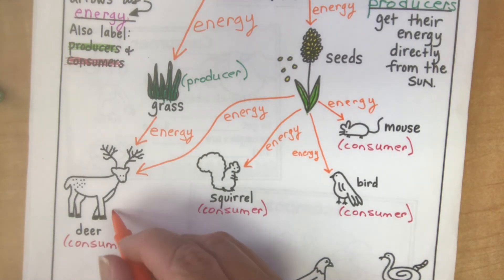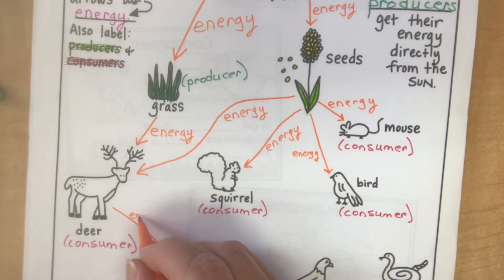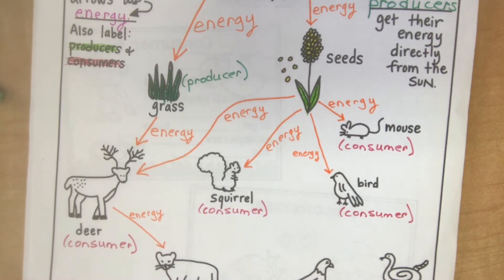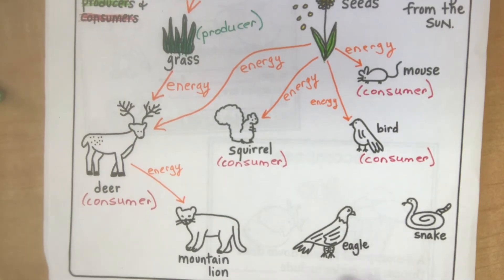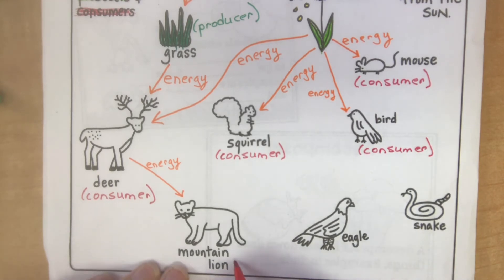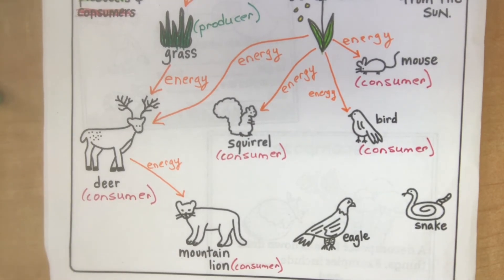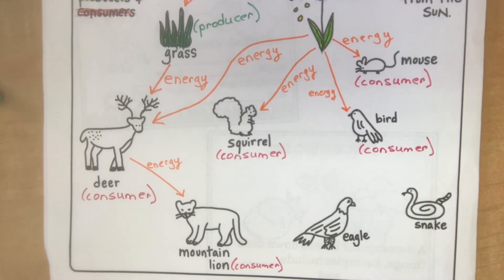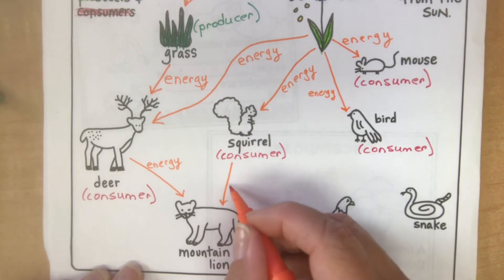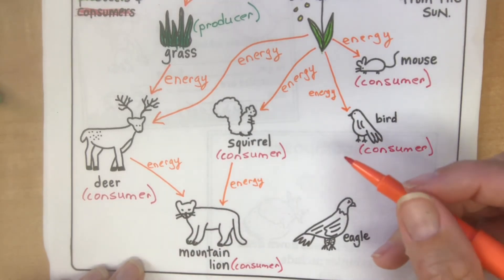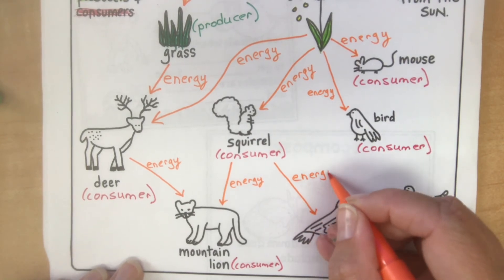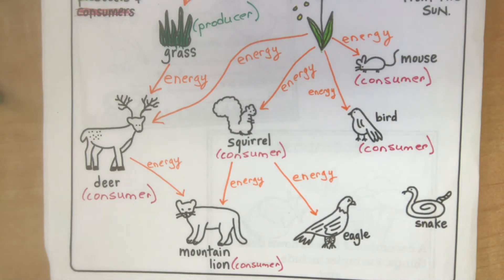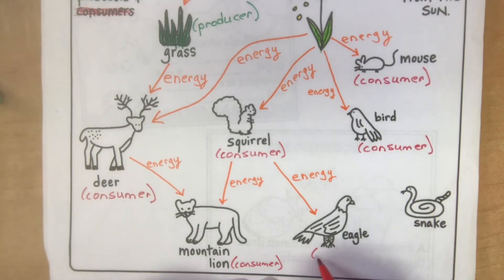Okay, here's where it gets a little sad. The deer can be eaten by a mountain lion, which means energy goes from the deer to the mountain lion, making the mountain lion a consumer. The squirrel gives energy to the mountain lion — not willingly, the mountain lion eats it. An eagle also eats a squirrel, so the energy from the squirrel goes to both the mountain lion and the eagle, making the eagle a consumer.